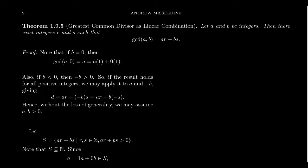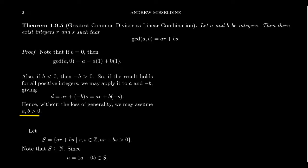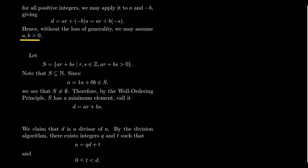We can also assume A and B are positive. If B were negative, then negative B is positive. If this result holds for positive numbers, then the GCD of A and negative B equals some integer times A plus some integer times negative B. Moving the negative sign over, if S is an integer so is negative S, so D equals AR plus B times negative S. Without loss of generality we can assume the two integers going forward are positive — that makes them natural numbers, and that's how the well-ordering principle comes into play.